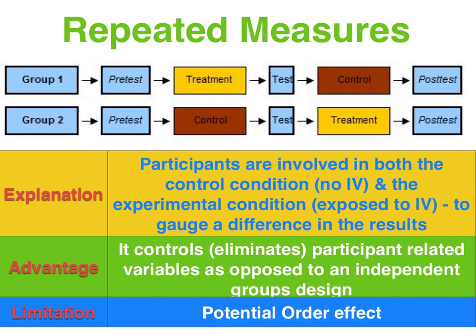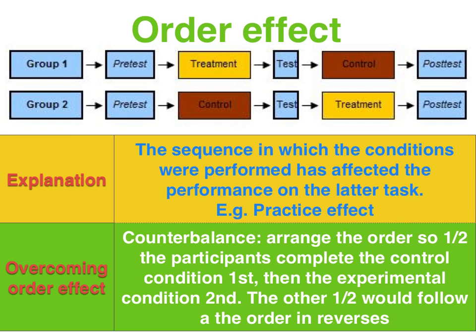The major limitation is we can potentially have an order effect if we don't counterbalance. An order effect has occurred when the sequence in which the conditions were performed — that is, control and experimental, so no IV and IV — has actually affected the performance on the latter task.